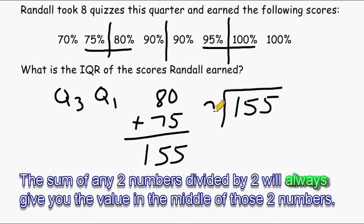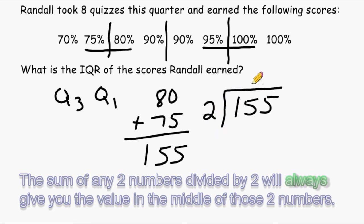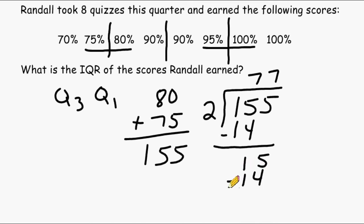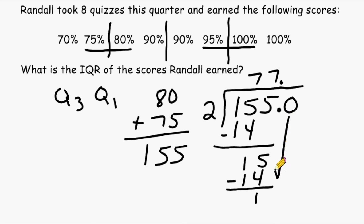Dividing the sum of two numbers by two will always give you the value right in the middle of those two numbers. Two goes into 15 seven times, giving a product of 14, leaving a remainder of 1. Bring down the 5; two goes into 15 seven times again, remainder 1. We add a decimal, bring it up, place a zero in the tenths place, and two goes into 10 exactly five times. So Q1 is equal to 77.5.